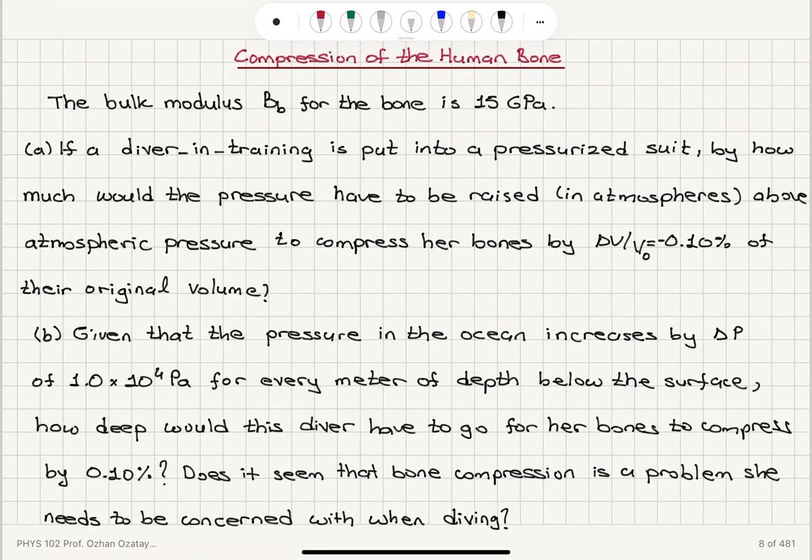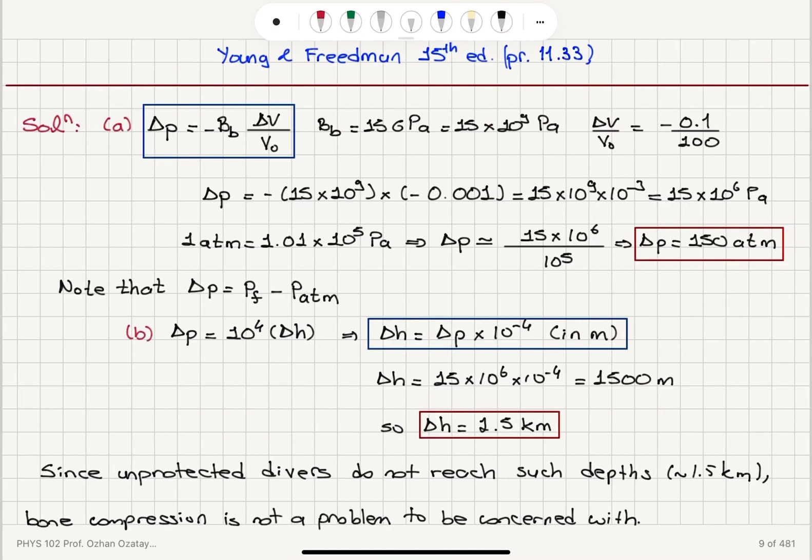Now, if we go into the ocean, the increase in the pressure is by an amount 10 to 4 Pascals for every meter of depth. So 10 to 4 times delta H is delta P, and if this is the delta P, 15 times 10 to 6 Pascals, we see that delta H should be 1500 meters.